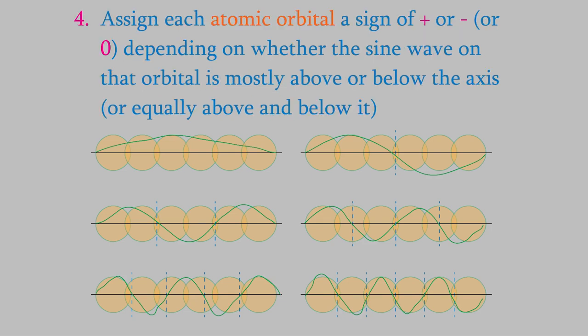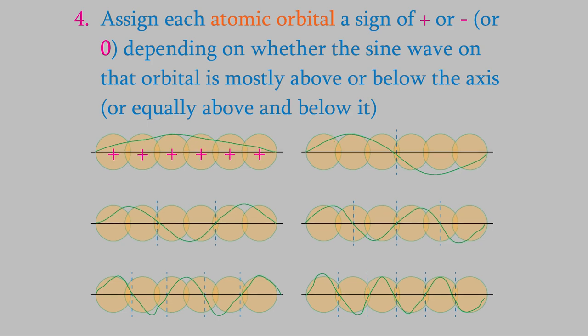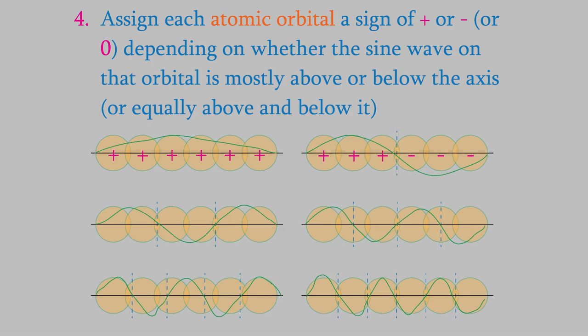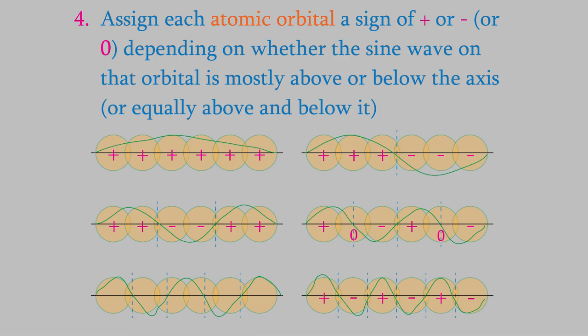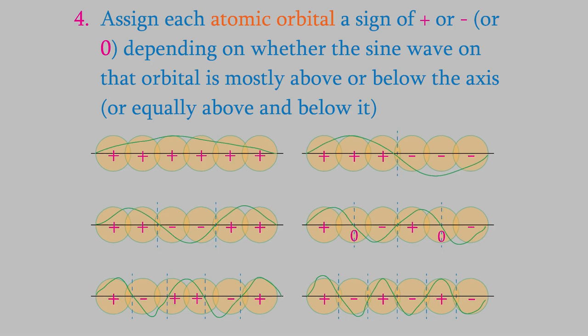In the next step, we assign each atomic orbital a positive or negative sign based on whether the sine wave is above or below the axis for each atomic orbital. So, for example, in the first molecule, the sine wave is above the axis for all the atomic orbitals, so we give them all a positive sign. In the second molecule, the sine wave on the first three orbitals is above the axis, and for the last three it's below the axis. We continue in this way for the rest of the orbitals. The fifth one is the trickiest. We have six atomic orbitals and there are four vertical lines, so these divide the molecule into five parts. Each part is 1.2 atomic orbitals long, so we can use that fact to realize that the first orbital is positive, the second is negative, both of the middle orbitals are positive, the next is negative, and the last one is positive.